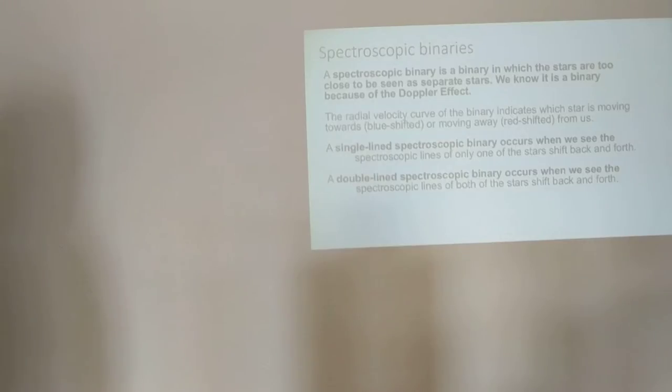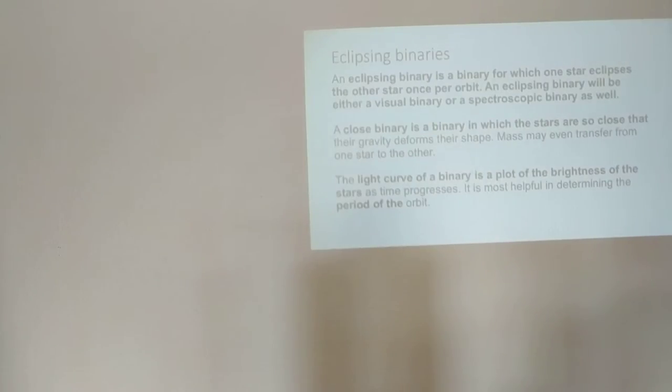If we have two stars that are so close together we can't see the separate stars, but we can tell from the spectrum that we see lines from both sets of stars, this is called a spectroscopic binary. If we see one set of lines because the other star is too faint, that's called a single-line spectroscopic binary. In a double-line spectroscopic binary, we see the lines of both stars shifting back and forth. An eclipsing binary is when one star eclipses the other.